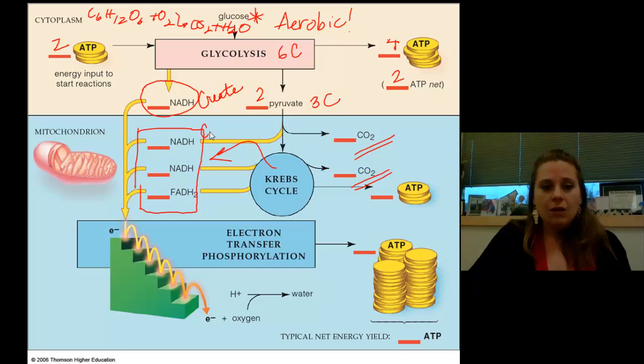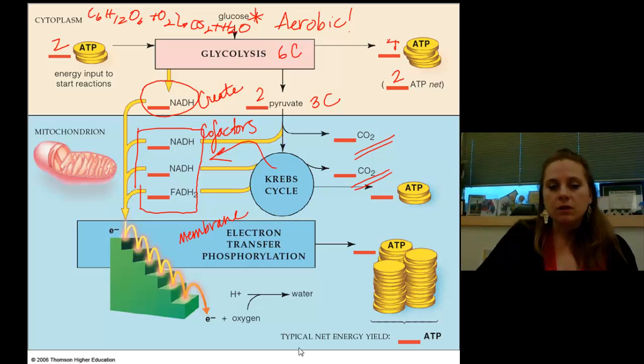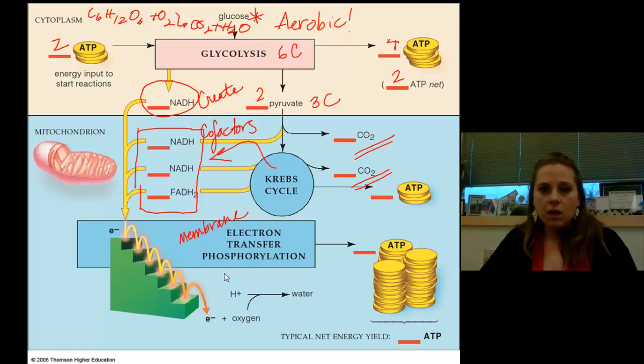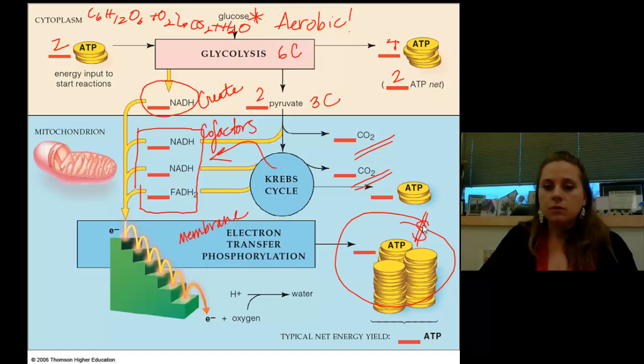Once we create our cofactors, we're going to allow those cofactors to donate their electrons to the ETS. This is occurring in the membrane of the cristae of the mitochondria. Those electrons are going to bounce through to set up a concentration gradient of hydrogen ions that eventually are going to make all of our ATP. So cha-ching there.